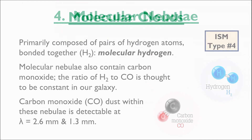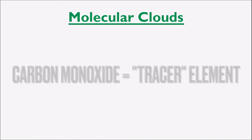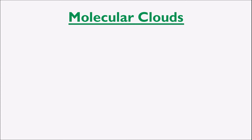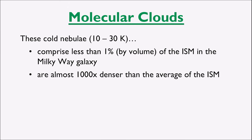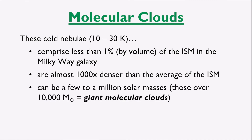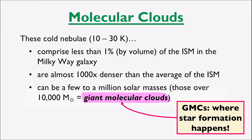Carbon monoxide serves as a tracer element for the molecular hydrogen, and that's how we can actually detect these molecular clouds. These molecular clouds are extremely cold, ranging from 10 to 30 Kelvin in temperature. They comprise less than 1% of the total volume of the ISM in the Milky Way galaxy, and because of their cool temperature, they are almost a thousand times denser than the ISM average. These molecular clouds can range from a few solar masses up to a few million solar masses. Those over 10,000 solar masses are generally referred to as giant molecular clouds, or GMCs, and it's in these GMCs that star formation can actually occur.